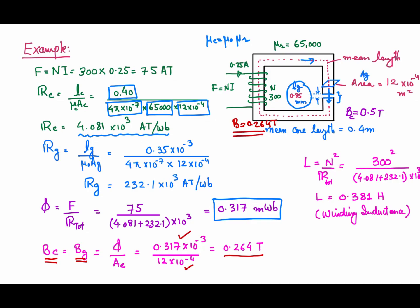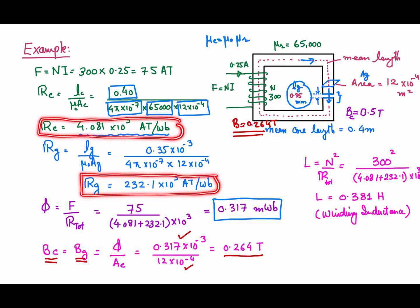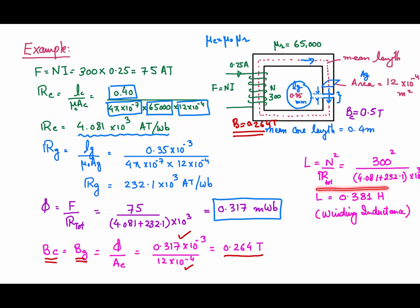The inductance is L = N²/R_total = 300²/(R_core + R_air). Adding the core and air gap reluctances together gives the total reluctance, and the inductance across the winding terminals is 0.381 henry. Reluctance plays a very important role in determining inductance — by adjusting material dimensions, you can obtain the required inductance.